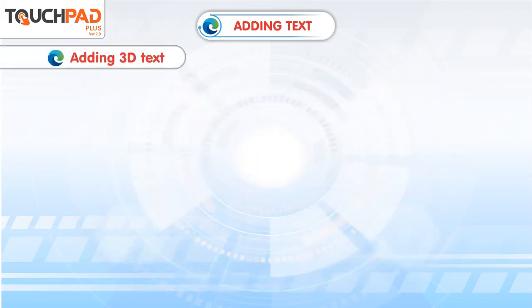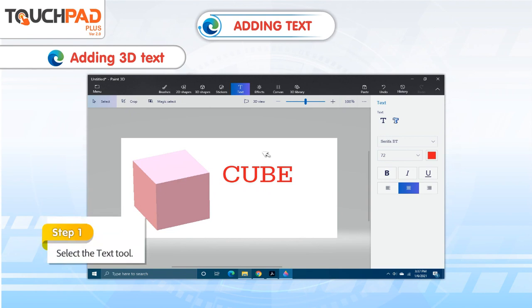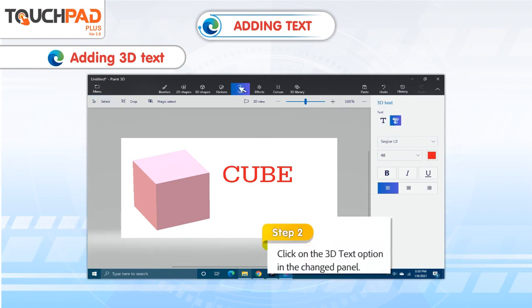Adding 3D text. To add 3D text to your drawing, follow the given steps. Step 1: Select the text tool. Step 2: Click on the 3D text option in the changed panel.